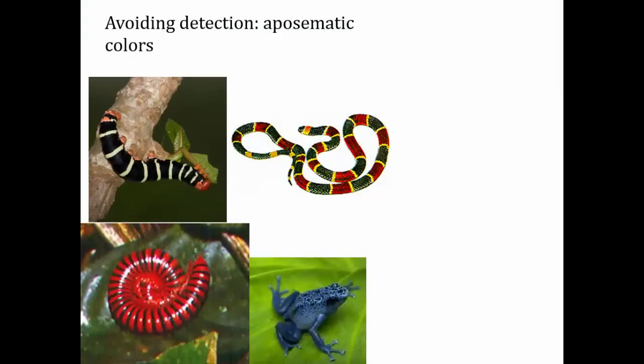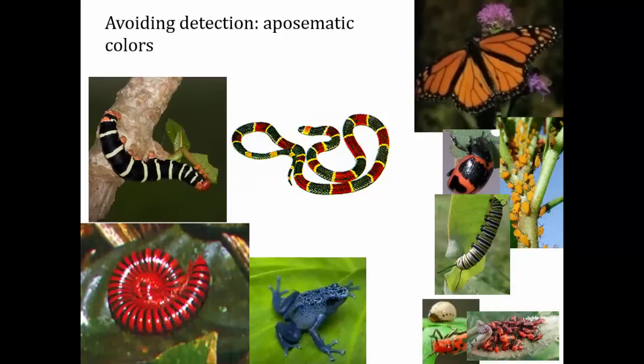Another strategy to avoid detection as a prey item is to be aposomatically — or warningly — colored. There are lots of examples, and you can bet that all of these species are toxic, venomous, or dangerous in some way. They either sequester poisons from the foods they eat or manufacture their own. These prey items don't even look like prey to predators because they are aposomatically colored — they warn the predator: eat me and you're going to regret it.